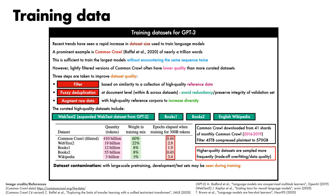One final point to note here relates to data contamination, which is a key issue when adopting large-scale pre-training on the internet, since there is a risk that the development or test sets of downstream tasks may have been encountered during the pre-training process. This is particularly pertinent for high-capacity language models with the ability to memorise lots of content. To address this, the authors did their best to remove overlaps between the training and test sets, but some overlaps were unfortunately missed due to a bug. Since it was not feasible to retrain the model, a different approach is taken in which the effects of the missed overlaps on downstream performance are characterised through experiments.